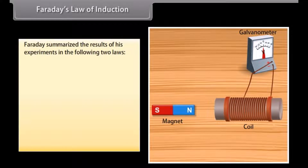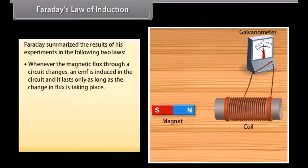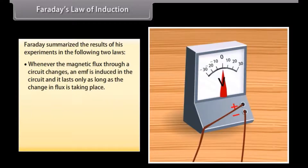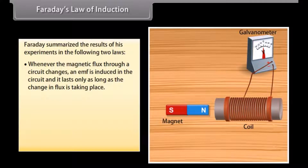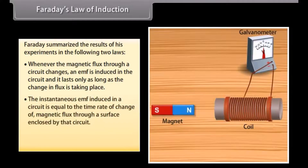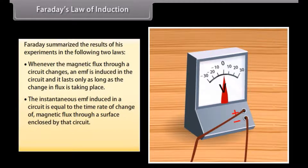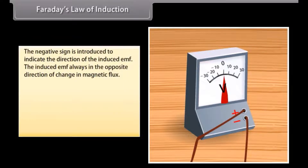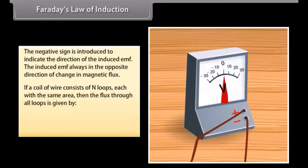Faraday summarized the results of his experiments in two laws. Whenever the magnetic flux through a circuit changes, an EMF is induced in the circuit, and it lasts only as long as the change in flux is taking place. The instantaneous EMF induced in a circuit is equal to the time rate of change of magnetic flux through a surface enclosed by that circuit: E = −dΦ_B/dt. The negative sign indicates the direction of the induced EMF, which always opposes the change in magnetic flux. If a coil consists of N loops, the flux through all loops is given by −N·dΦ_B/dt.